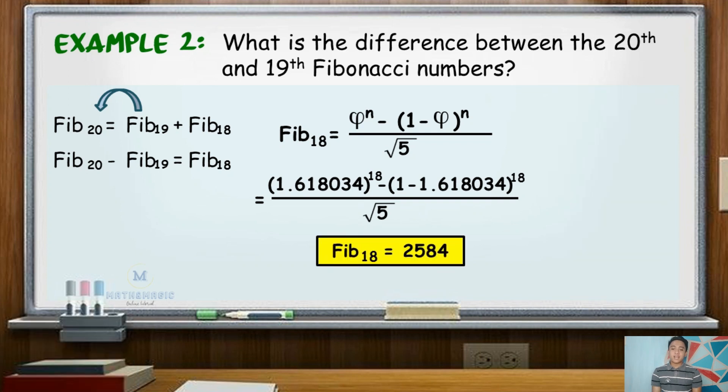Now, if you want to check whether this value is correct or not, you may use the first method or the listing of values. Hence, the difference of 20th and 19th Fibonacci numbers is 2,584.